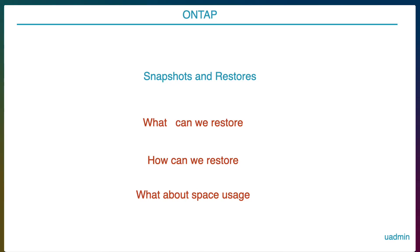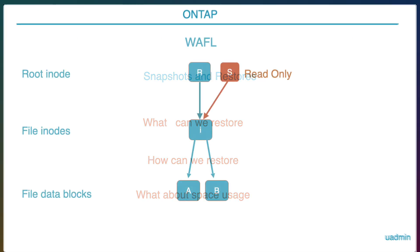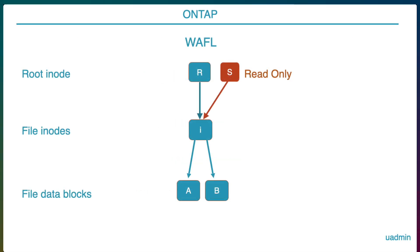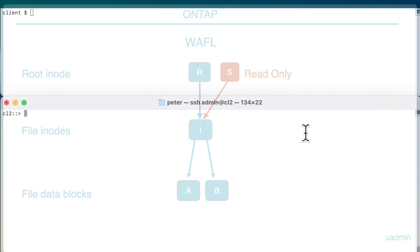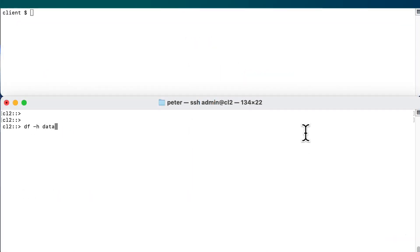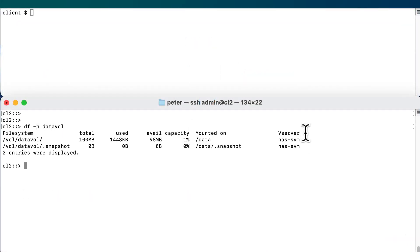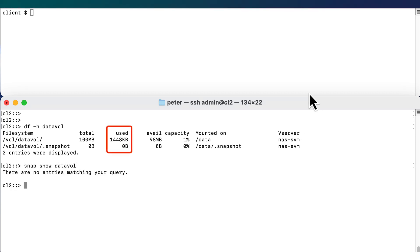Now let's have a look at restoring data from a local snapshot copy. We'll see what we can restore, how we can restore it, and also we'll have a look at space usage. Keep in mind that a snapshot copy in ONTAP is simply a read-only copy of the root-i node of the volume. In our demo environment we've got a 100 MB volume and except for some metadata the volume is empty, and there are no snapshots in this volume yet.